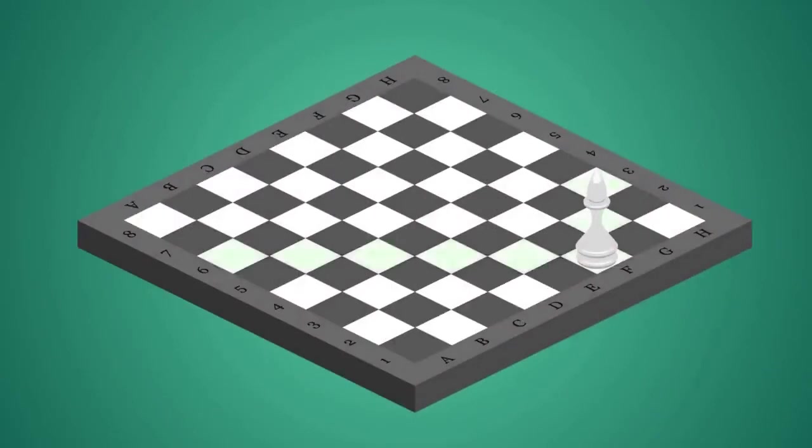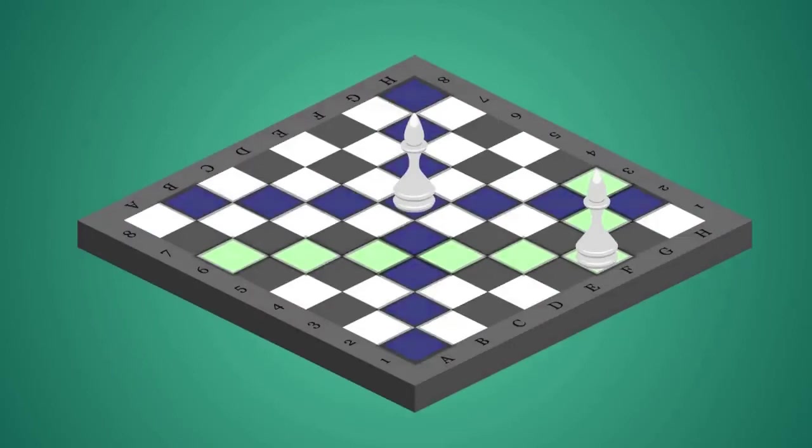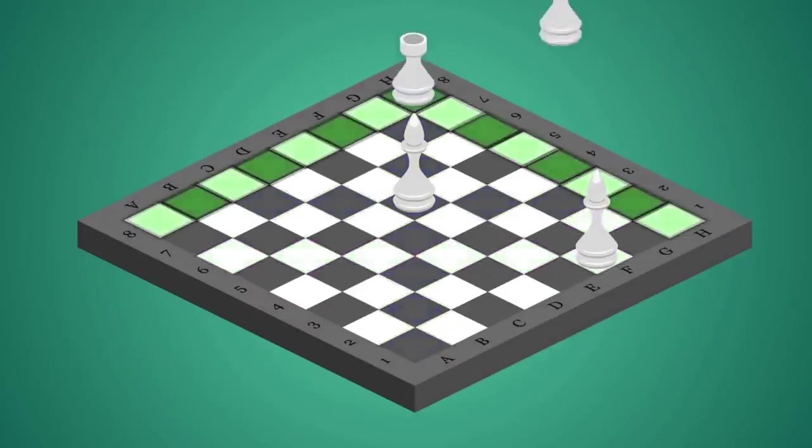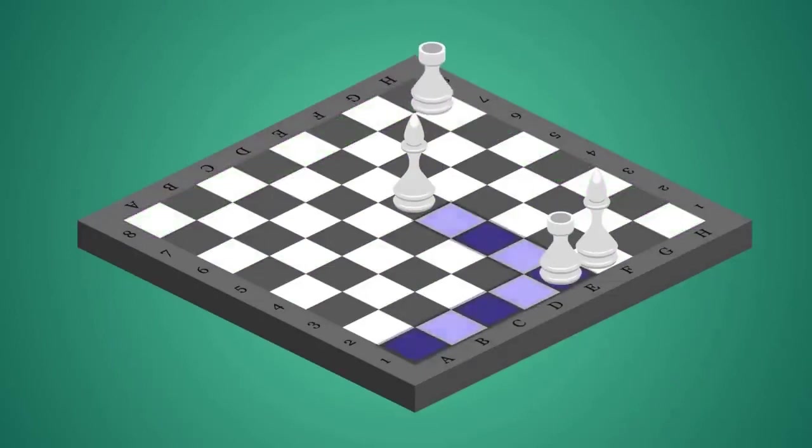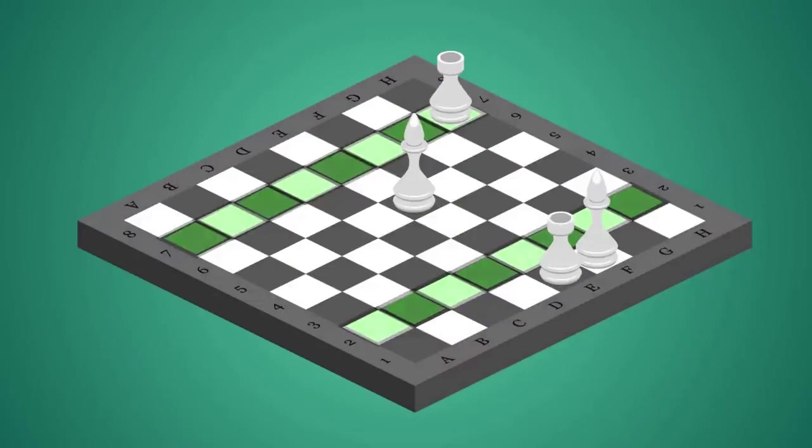Bishops are at their strongest when they're on or near long diagonals. They can control more squares. Rooks have the most power in open files. Try to position your rooks on files that don't contain any of your pawns. Rooks can also be quite helpful on the 7th rank for white and the 2nd rank for black, but only if your opponent's king is on the starting rank.